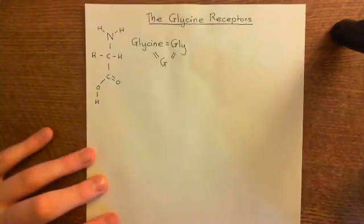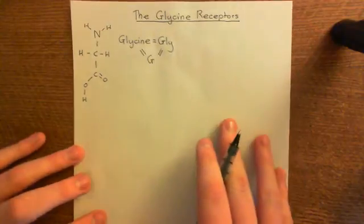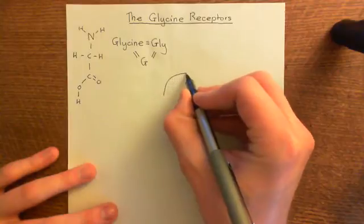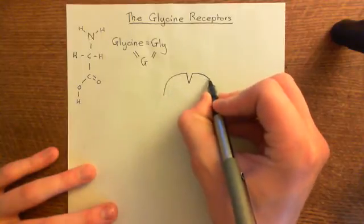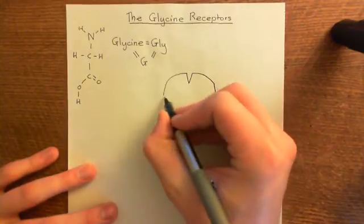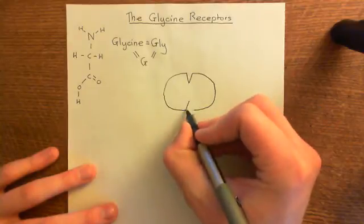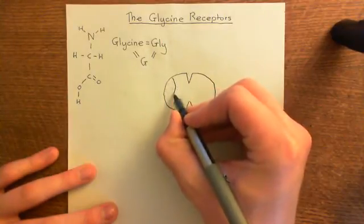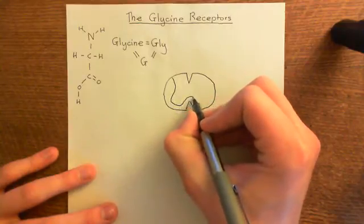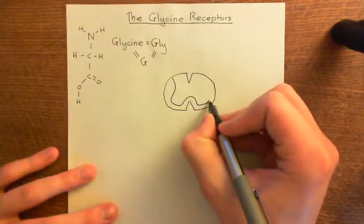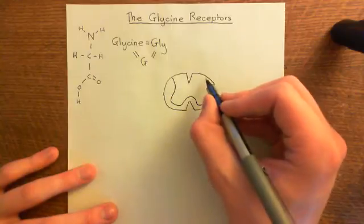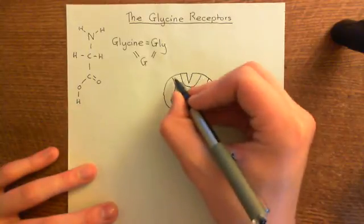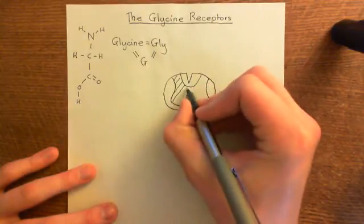Now let's talk about the role of glycine in the spinal cord. If we draw a little picture of the spinal cord — taking a transverse cross-section — it has two incisures, one at the ventral aspect and one at the dorsal aspect. You have this sort of butterfly shape of grey matter within the spinal cord. Grey matter is the cell bodies of neurons, whereas white matter is the axons of neurons — it's the myelin of the axons that makes the white matter appear white.